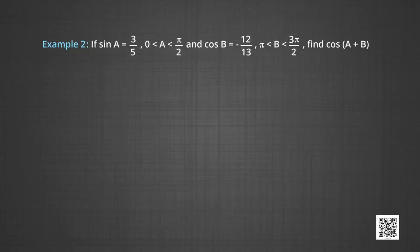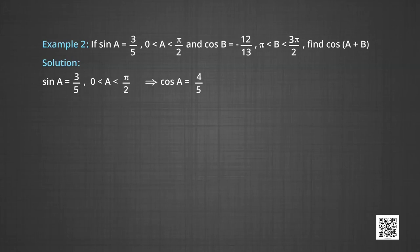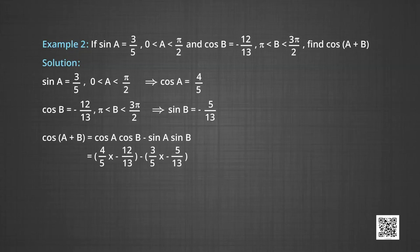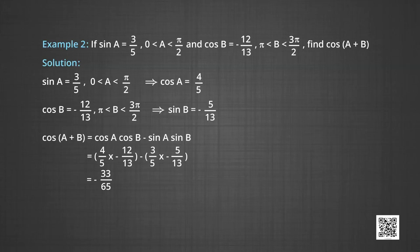In Example 2, with sin a = 3/5 and cos b = -12/13, we find cos(a+b). Since a is in (0, π/2), cos a = 4/5. Since b is in the third quadrant, sin b = -5/13. Using cos(a+b) = cos a cos b - sin a sin b: = (4/5)(-12/13) - (3/5)(-5/13). On simplification, cos(a+b) = -33/65.